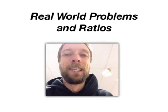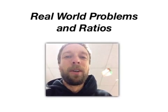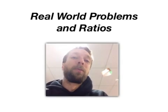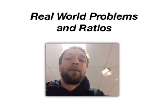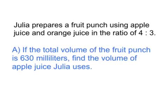Hey little mathematicians, time to learn about real world problems and ratios. We're going to be looking at two problems that both start from the same setup. Julia prepares a fruit punch using apple juice and orange juice in the ratio of 4 to 3.